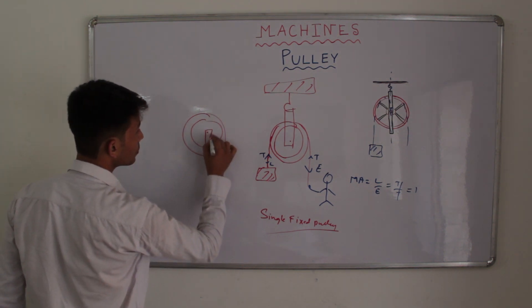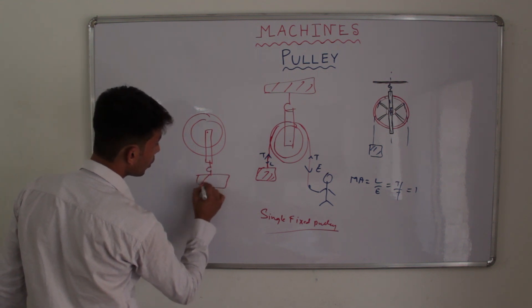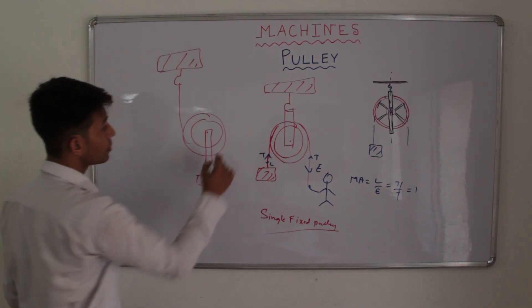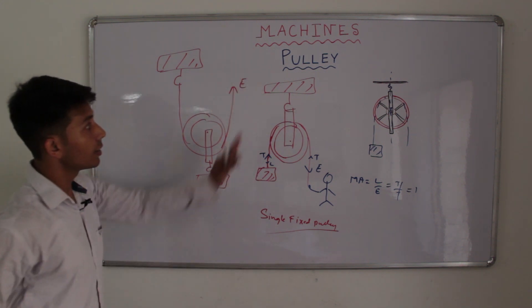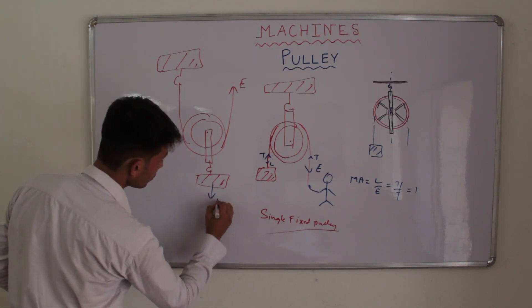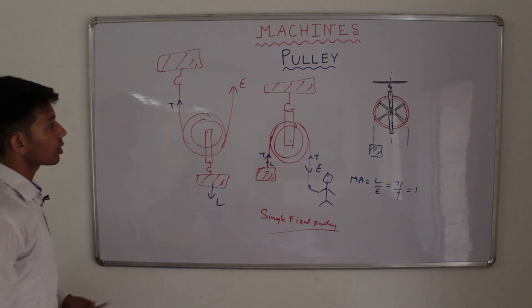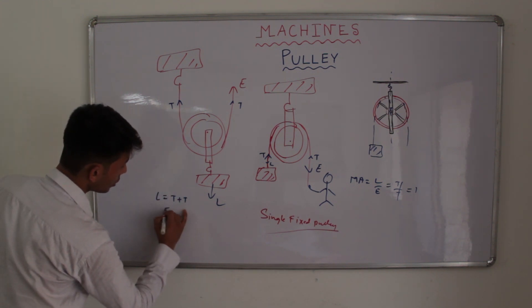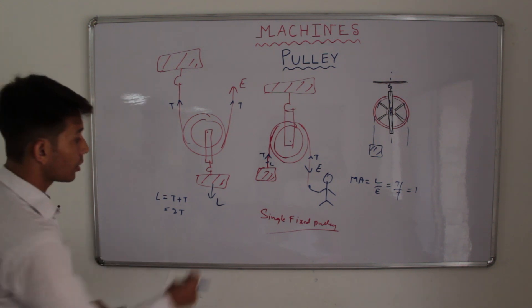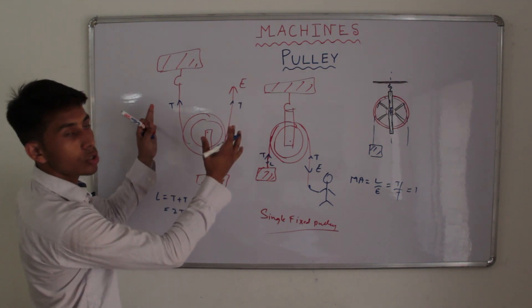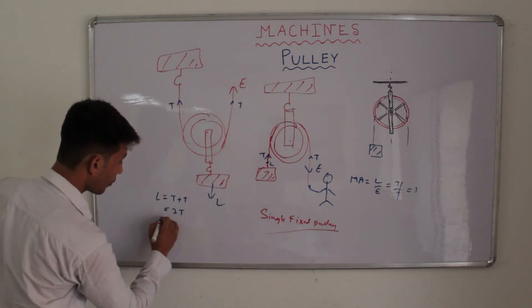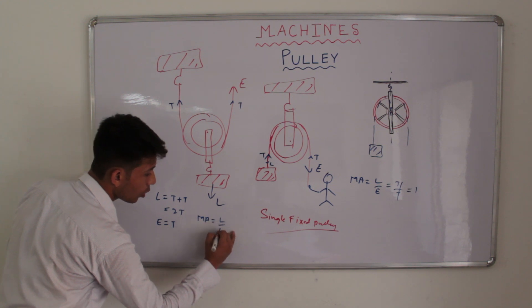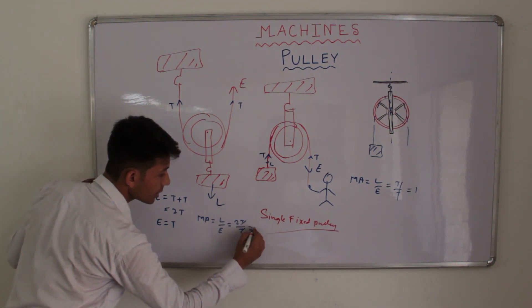We will move on to the second category where the axis will not be fixed. Rather the load will be applied over here and it will be fixed at the other end. Thus the effort will be applied in this direction. Now due to this load acting in the downward direction, there will be an equivalent tension in the string at both points. So to balance this load we have two tensions — thus our load equals 2T. To balance this load there will be tension in both ends of the string, whereas for this effort we will have only a single tension T. So we have mechanical advantage equals load by effort, which equals 2T by T, that is equal to 2.